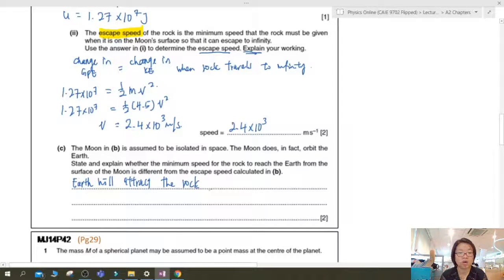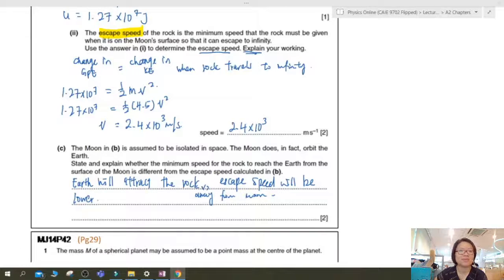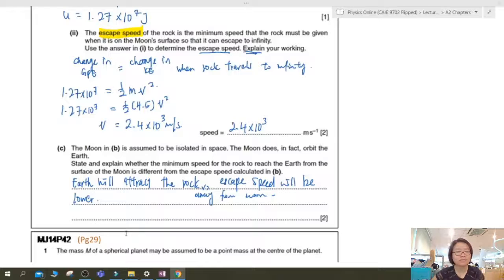Last part. The moon is assumed to be isolated in space, but the moon is actually orbiting the earth. State and explain whether the minimum speed for the rock to reach the earth from the surface of the moon is different. So right now, earth will attract the rock away from the moon. Make sense? So this is one point. So if earth is helping to attract the rock away from the moon, the escape speed is lower because you got some external help. Alright, so just consider that as well.